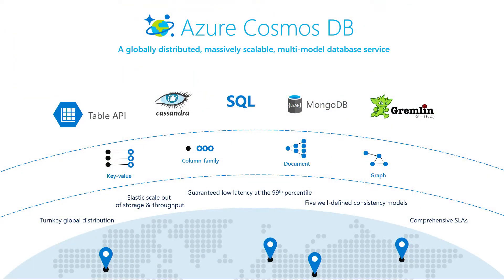If you're not familiar with Azure Cosmos DB, this is Microsoft's globally distributed multi-model database service for building planet-scale applications. We support multiple models, including key value, column, document, and graph database models, and provide wire protocol support for the most popular databases out there, including Cassandra, MongoDB, Gremlin, and of course our own native format.